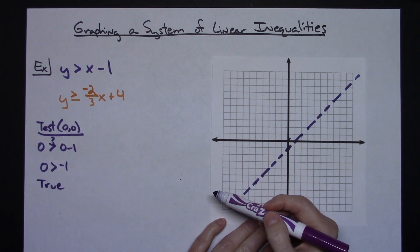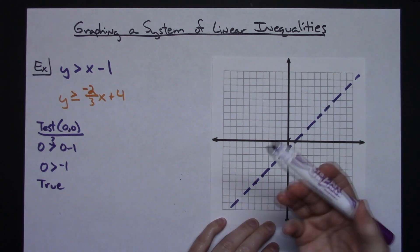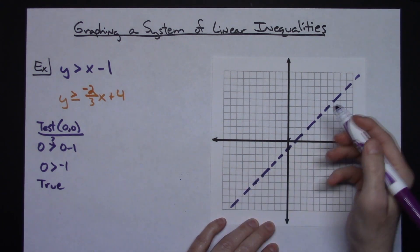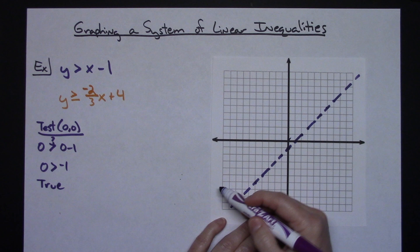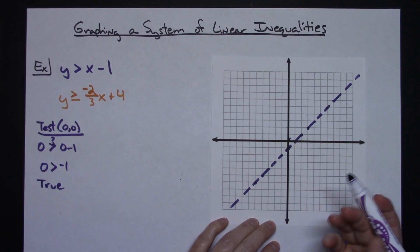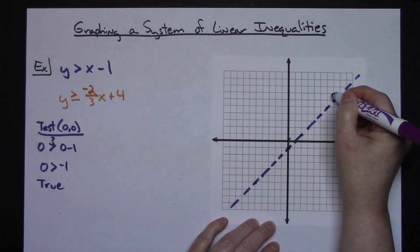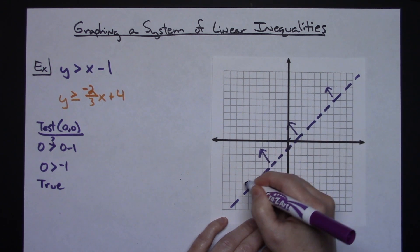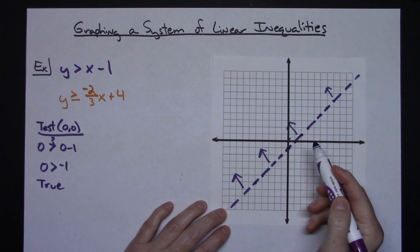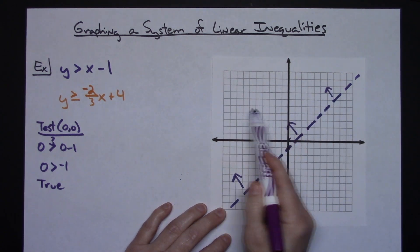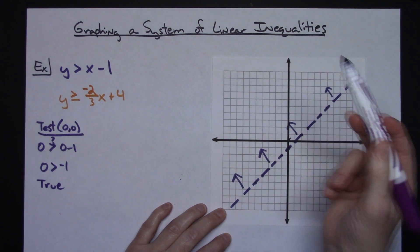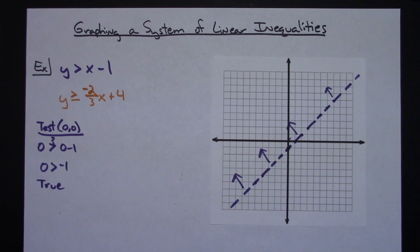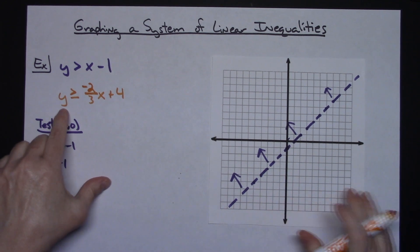Since the point (0, 0) made this inequality true, every point on this side of the line will also make it true. A lot of teachers will tell you to just do arrows indicating which side you're shading — that works — or you can literally shade the entire side with your pencil.